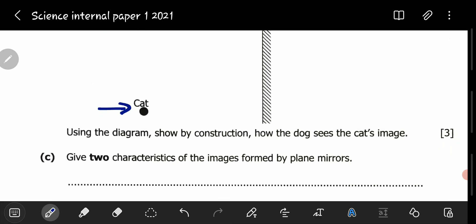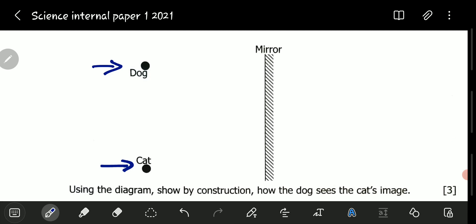Using the diagram, show by construction how the dog sees the cat's image. This is a very good question. However, there are steps that we follow when dealing with each and every question. When it comes to plane mirrors, always take note that the image is seen behind the mirror. The image is the same distance behind the mirror as the object is in front of the mirror. So we start by concentrating on the cat first.